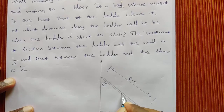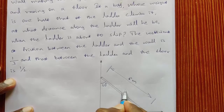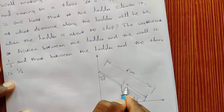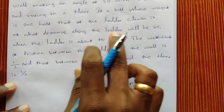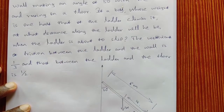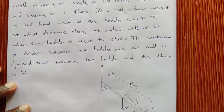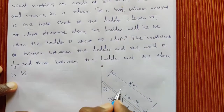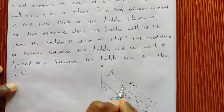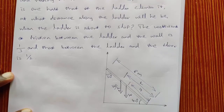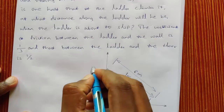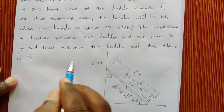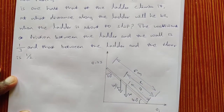The ladder weight W acts at the center, so it acts at a distance of 4 meters. The boy's weight is W/2 since it is half that of the ladder. The position of the boy along the ladder is unknown, so we consider it as L. The coefficient of friction between the ladder and the wall is 1/3, that is 0.33, and between the ladder and the floor is 1/2, that is 0.5.